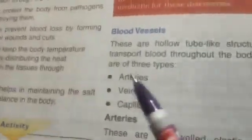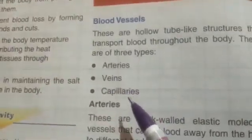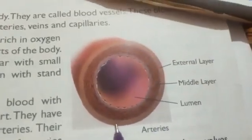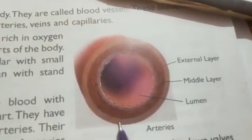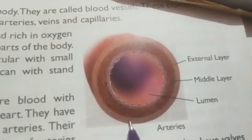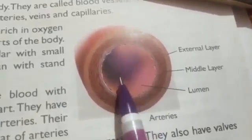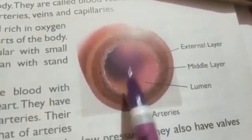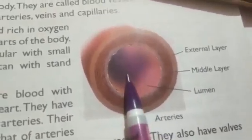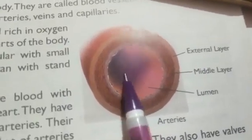The three types are arteries, veins, and capillaries. Looking at the artery, arteries are thick-walled — their walls are thick and they are very elastic muscular vessels. These arteries carry pure blood away from the heart to the parts of the body.